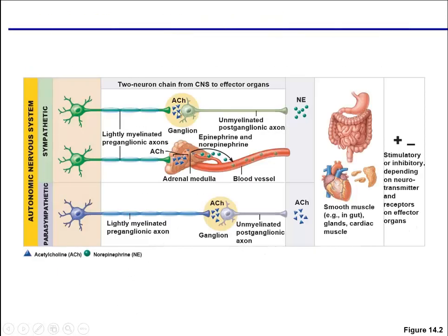To summarize: the sympathetic side has a cholinergic preganglionic fiber and an adrenergic postganglionic fiber releasing norepinephrine — adrenergic comes from the old term for epinephrine, adrenaline. On the parasympathetic side, both the preganglionic and the unmyelinated postganglionic axons are cholinergic, releasing acetylcholine.